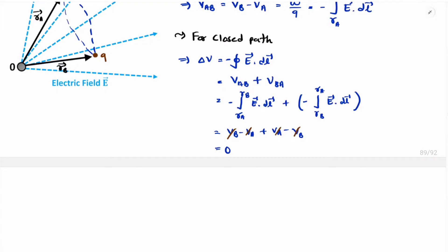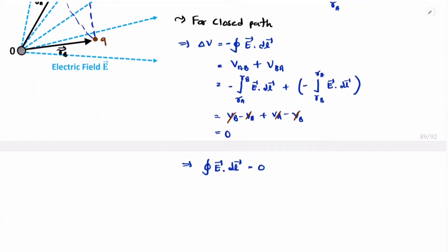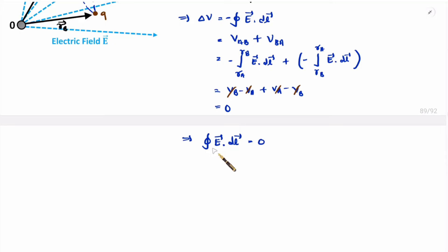This statement says that for a closed path, the line integration of electric field with respect to the line is 0. This is applicable to a non-time-varying field — the electric field is not changing with respect to time. So for a closed path, the line integration of electric field is 0, and this is Maxwell's third equation in integral form for a non-time-varying field.